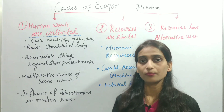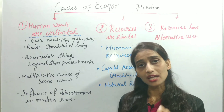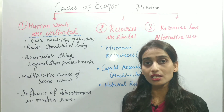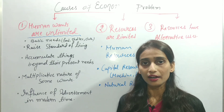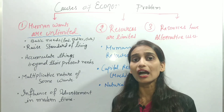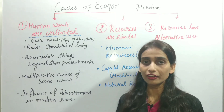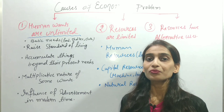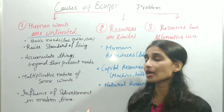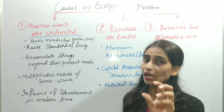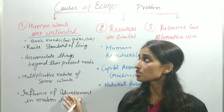The fourth reason is the multiplicative nature of some wants. This means that if you want one particular thing, several related things come along with it that you may not have initially required. For example, if you want to buy a car, purchasing the car leads to further wants: you need petrol, a driver, parking space, and car washing. All these are the multiplicative nature of wants. So just wanting to buy a car means you have to maintain all these related things — making wants unlimited.